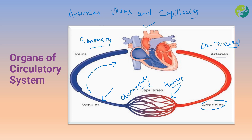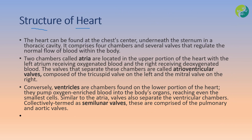Arteries, veins, and capillaries have different thicknesses depending on the blood supply. Arteries have thick elastic walls and a small lumen, whereas veins have thin walls and a large lumen. Capillaries have a single-cell wall structure.